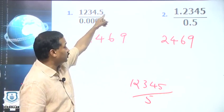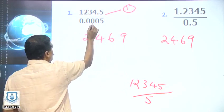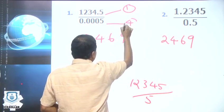How many decimals on the numerator? One. Only one decimal. Denominator? 1, 2, 3, 4. Four decimals.